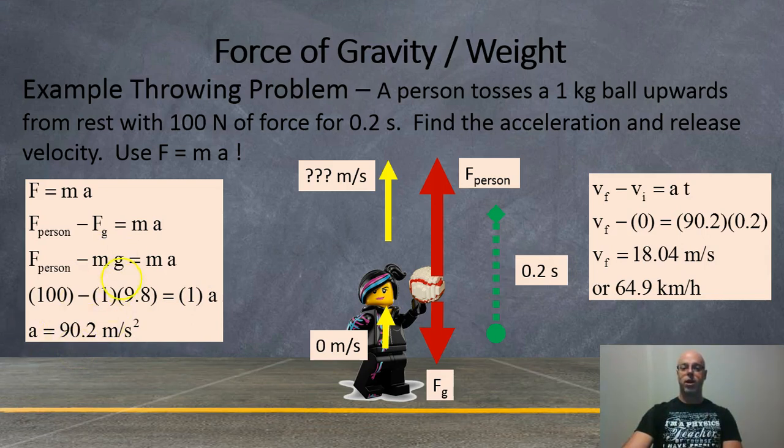Now that we've got the acceleration, we can use the equations of motion. We don't have displacement, we don't care about that one. So, we're going to use this formula that does not use displacement. Final velocity, subtract initial velocity, equals acceleration times time. Final velocity, subtract an initial velocity of 0, equals 90.2 acceleration, times 0.2 seconds of time. And we've got a final velocity of 18.04 meters per second. And if you multiply that by 3.6, you get 64.9 kilometers per hour.